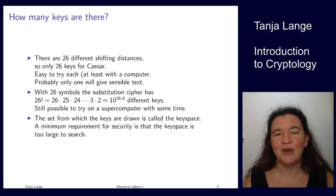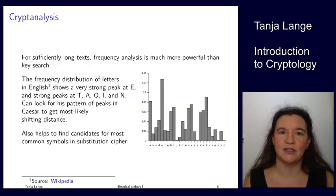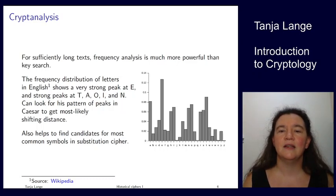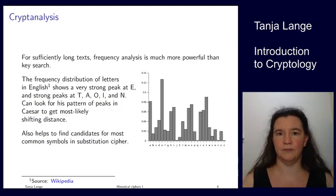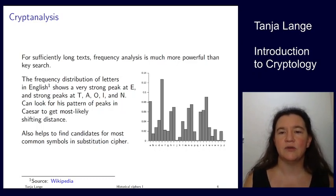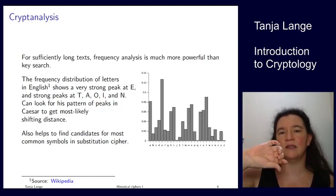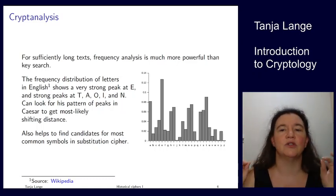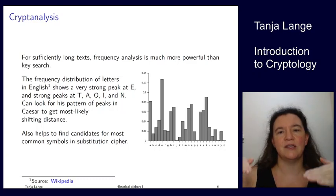But brute force isn't the only way to attack these. If you have a sufficiently long text — say my friend and I are sending long letters with our secret alphabet — what gives it away is that this is natural language. And natural language is not uniformly distributed. Here I've put the frequency distribution of letters in English: you see a very strong peak at E, then T, A, O, I, N.